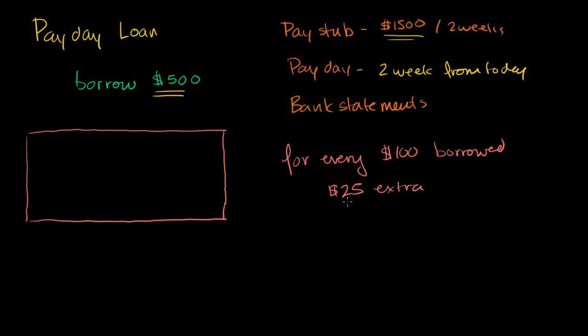But this isn't 25% a year. This is 25% for two weeks. And at the end of this video, we're going to do a little bit of math on what that actually turns into on an APR or an effective APR basis. And these numbers are not crazy. These are actually very typical for payday loans.